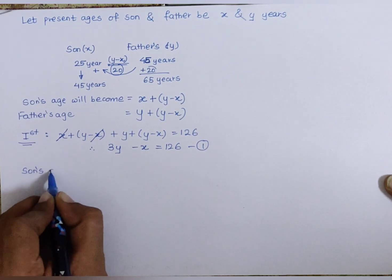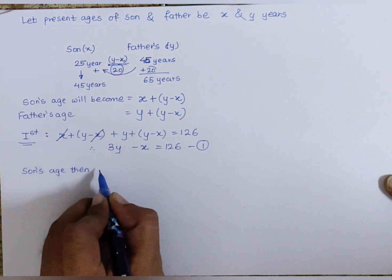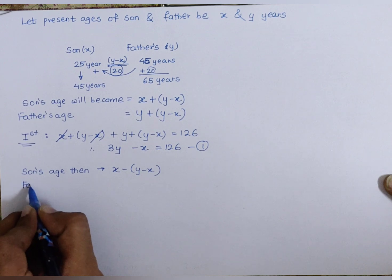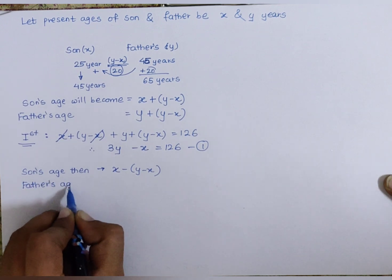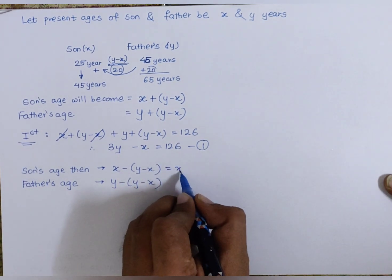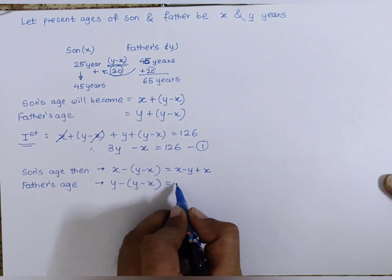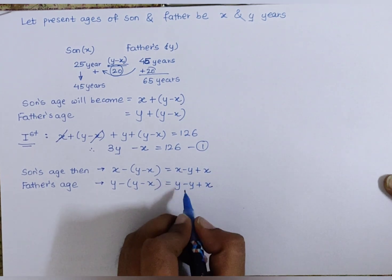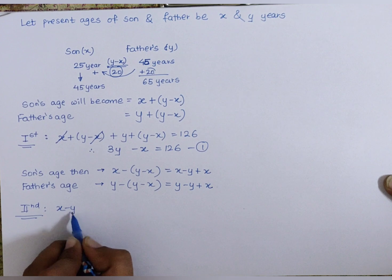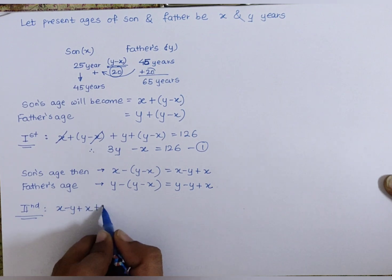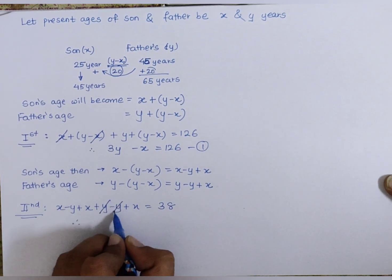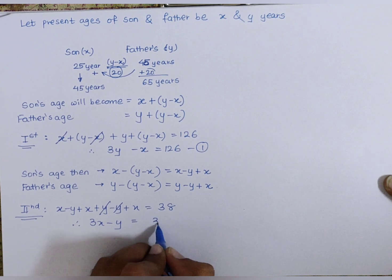The son's age then becomes x minus y minus x, and the father's age becomes y minus y minus x. This gives me x minus y plus x and y minus y plus x. The sum then becomes or is given as 38. So this gives me 3x minus y equals 38.